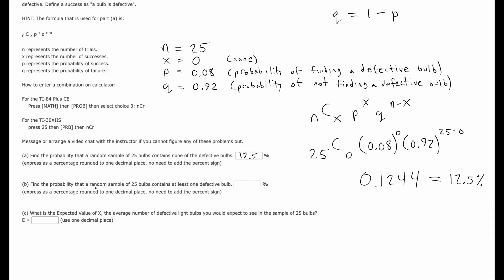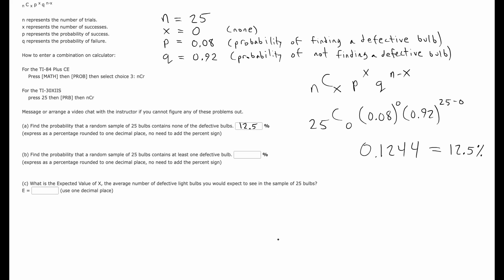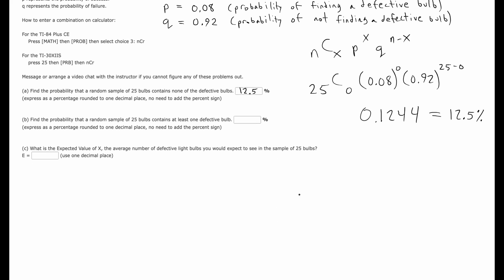Find the probability that a random sample of 25 bulbs contains at least one defective bulb. So there's a few possibilities for the way that you could approach that.